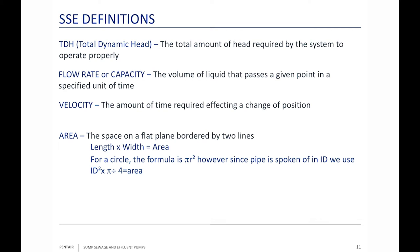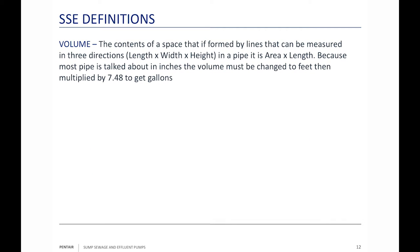Volume is the contents of a space measured in three directions. For a leach field, that's length times width times depth. For a piping system, it's area times length, giving cubic inches; divide by 1,728 to get cubic feet, then multiply by 7.48 to get gallons. Atmospheric pressure is the weight of the atmosphere at a given point and time — it changes. Vacuum is the measure of a pressure below atmospheric pressure — not necessarily the void of outer space, but something less than atmospheric pressure.